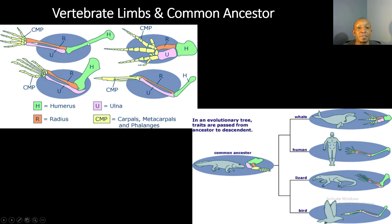All these organisms contain a humerus, shown in green, and all these organisms contain an ulna, shown in purple or pink. All these organisms contain a radius, shown in red. And last but not least, all these organisms contain carpals, metacarpals, and phalanges, shown in yellow. They contain all of these structures, but all these structures have a different function depending upon the organism.